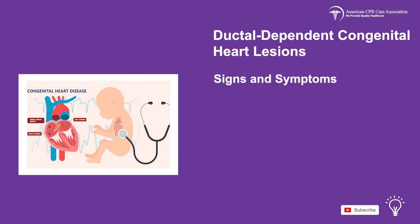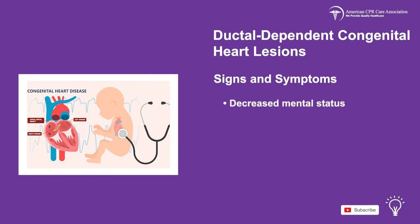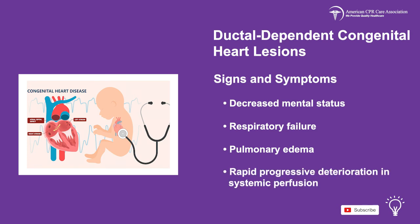Signs of ductal-dependent lesions for systemic blood flow include congestive heart failure, pre-ductal versus post-ductal differential blood pressure, differential cyanosis, absence of femoral pulses, decreased mental status, respiratory failure, pulmonary edema, and rapid progressive deterioration in systemic perfusion.